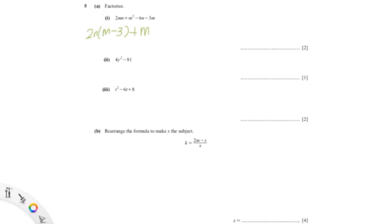Plus m(m-3). You can see that m-3 is common in both, so you could factorize it even further, which would be (2n+m)(m-3). You can check your answer by expanding the bracket, which would give you the same answer as the question.